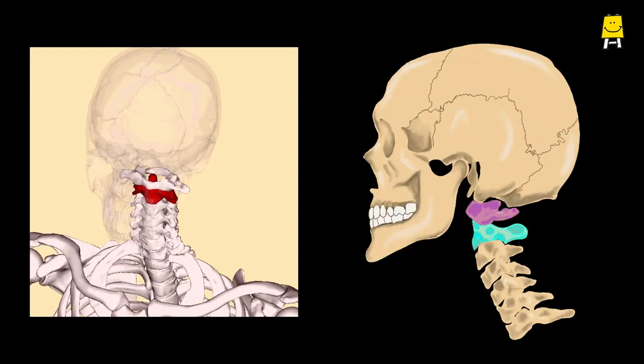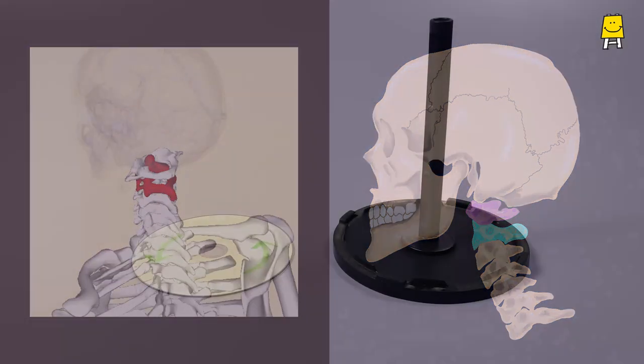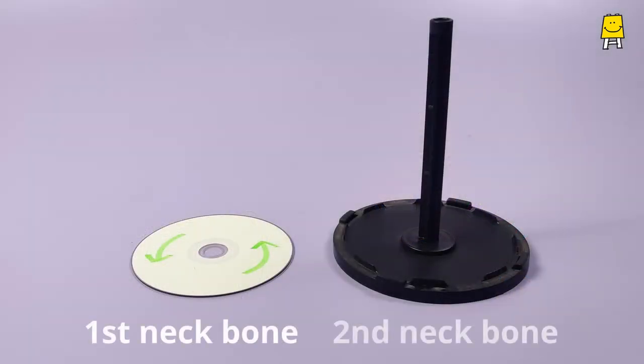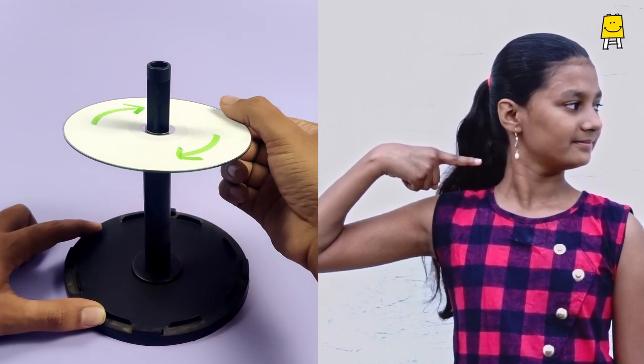This joint is also present in the neck. The pivot joint between the first two bones of the neck allows you to move your neck from side to side.